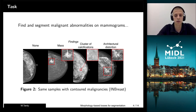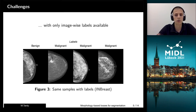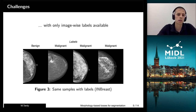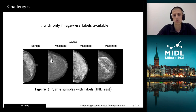But in our case, what is difficult is that we don't have any bounding boxes around the regions to use for training, but we just have only image-wise labels available, knowing that there is either nothing to segment or there is something somewhere in the image to be segmented.